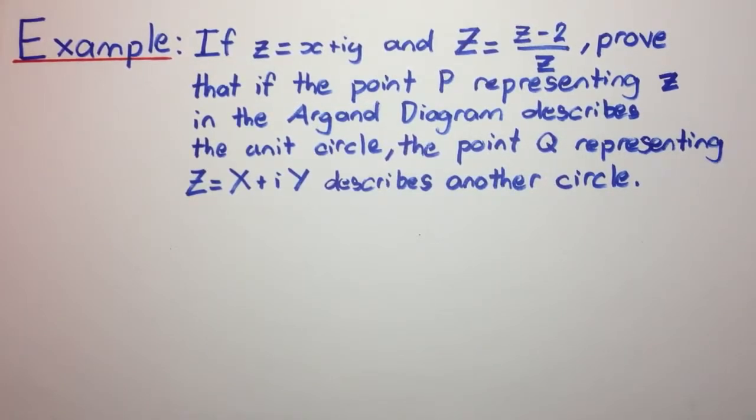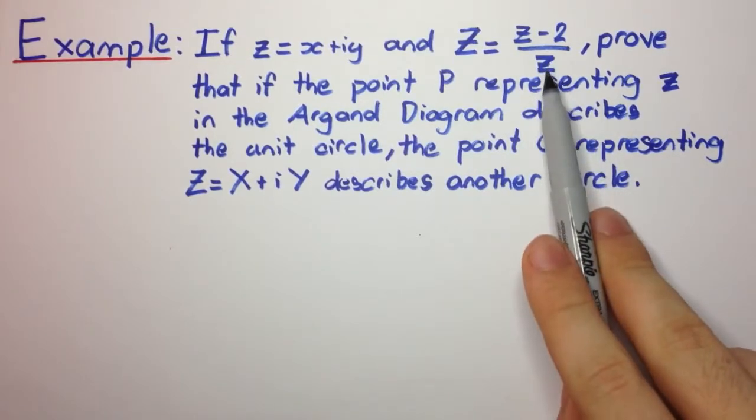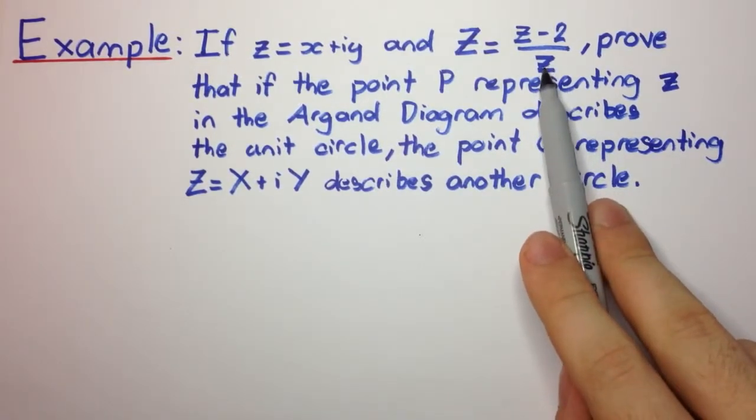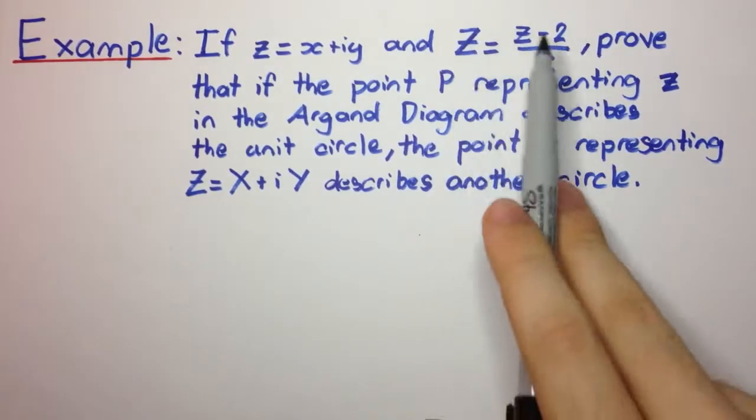Okay, so the first thing is to not be confused with these capital Zs and little zs. The little z is just some complex number and the capital Z is just some other complex number and they're related in this manner.